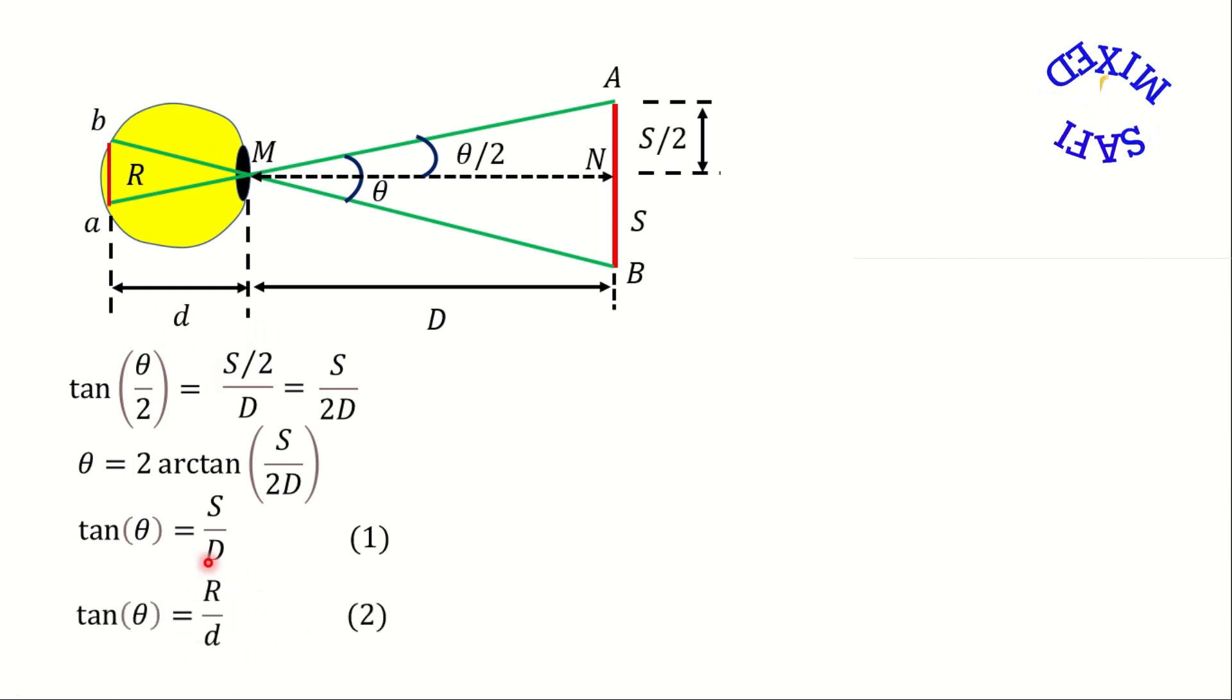Comparing equations 1 and 2 we can write R divided by small d equals S divided by capital D, or R equals small d times S divided by capital D.